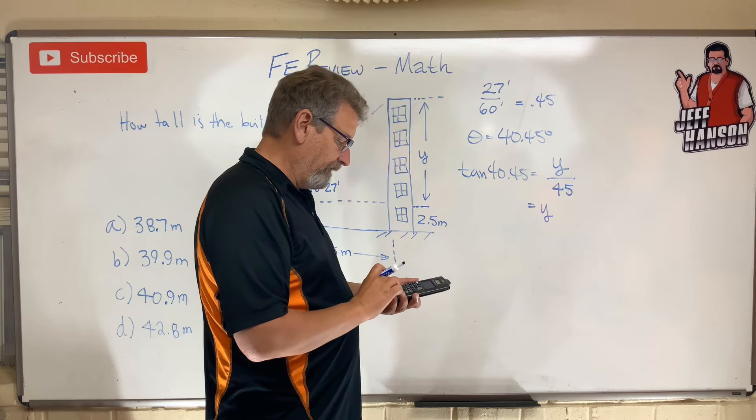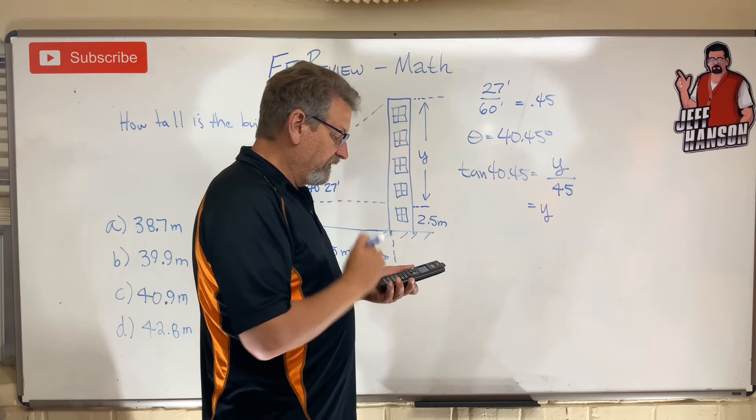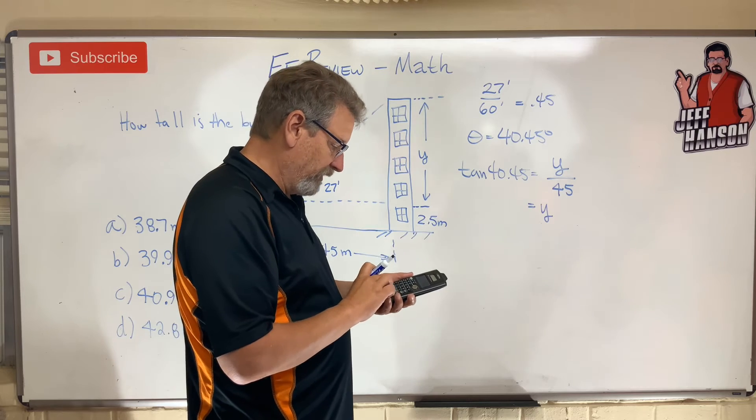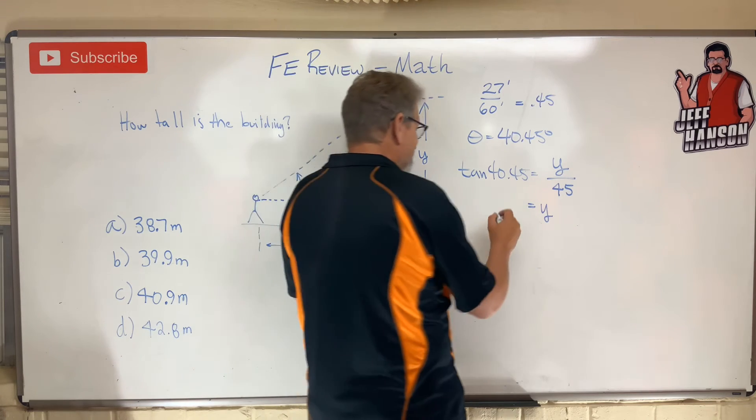40.45 equals... that's 0.853 times 45... times 45 equals... boom, 38.36.